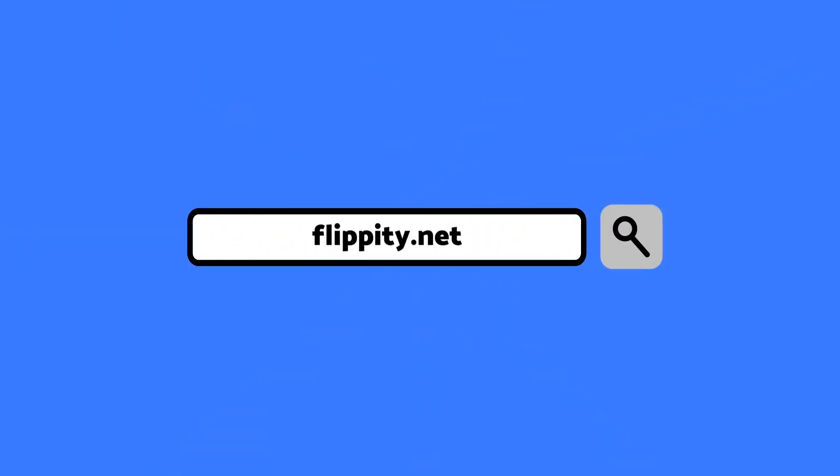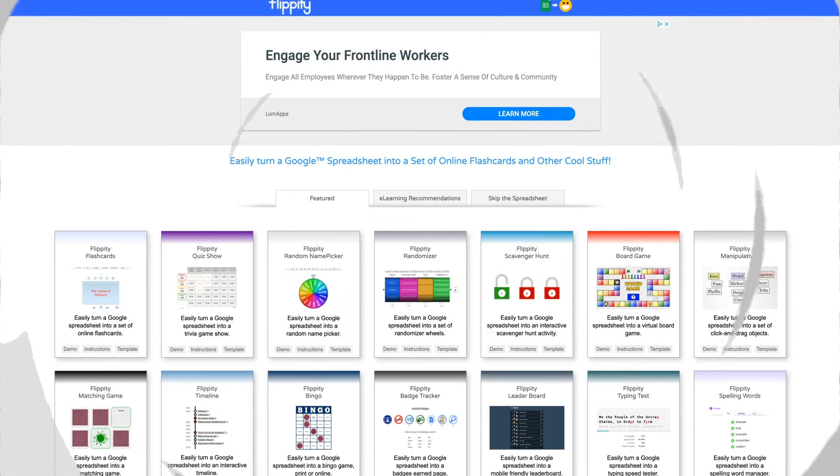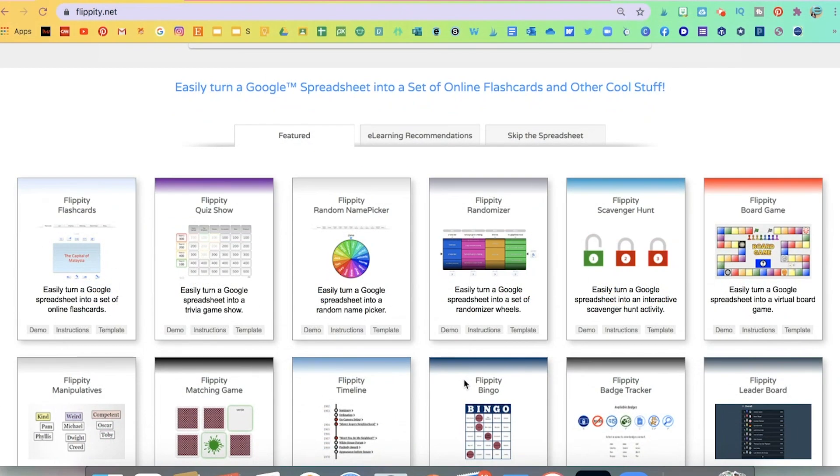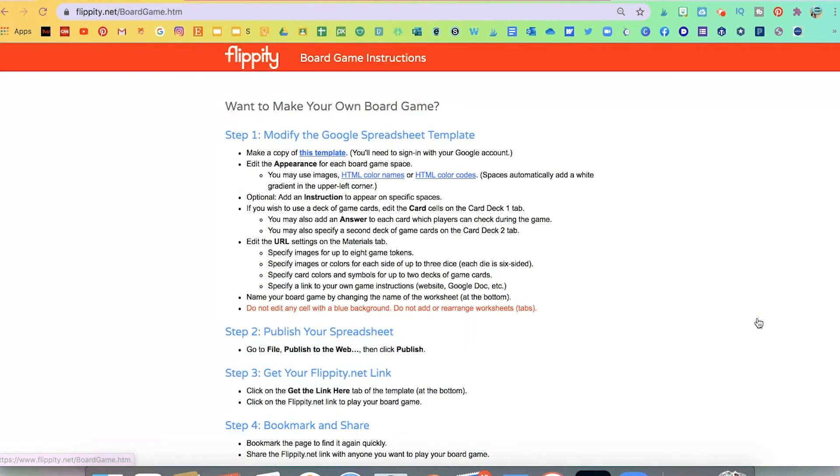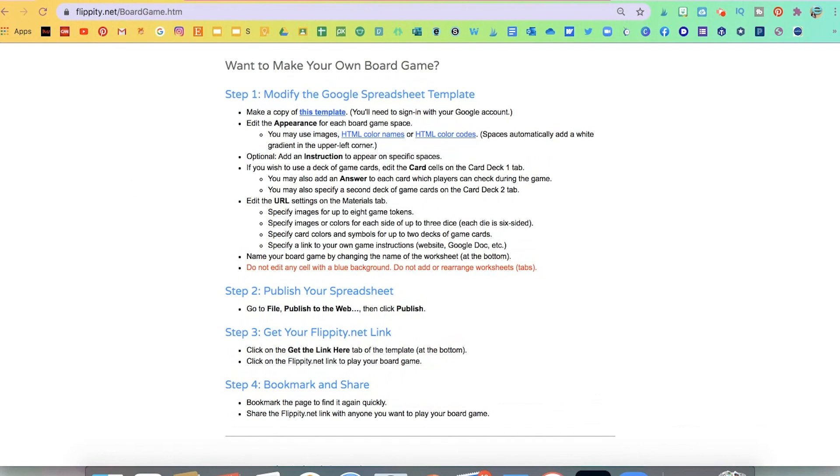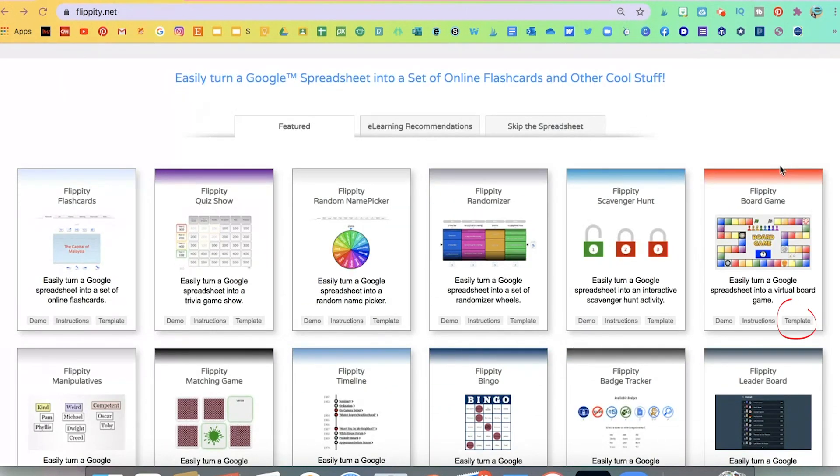The first thing you're going to do is go to flippity.net. You're going to scroll down and look for the one that says Flippity Board Game on the bottom. There are going to be three options. You can look at a demo again. It also has written instructions and shows you step by step what to do. And then once you're ready to start, go ahead and click on template.